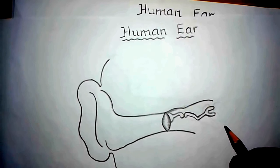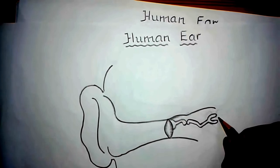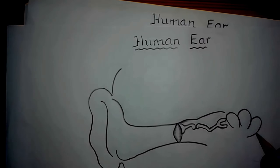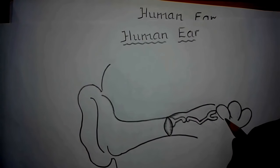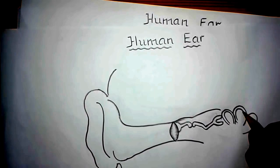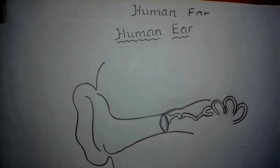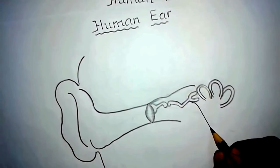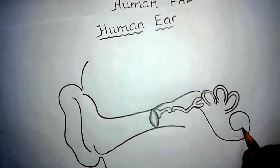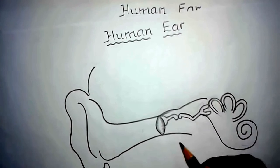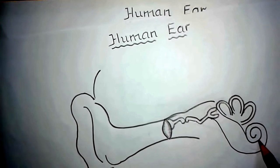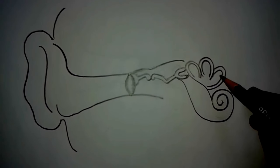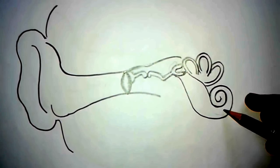Now the third part of the ear is the inner ear. The inner ear consists of an upper part called the utriculus, which has three semicircular canals. So draw the three semicircular canals like this. The lower part of the inner ear is called the sacculus, and it has an appendage called the cochlea. The function of the utriculus and the sacculus is to maintain balance of the body.